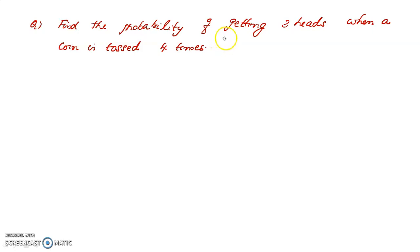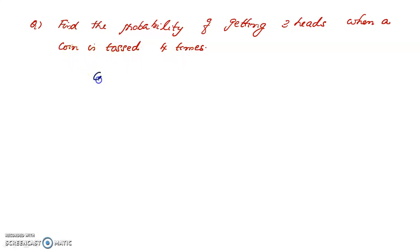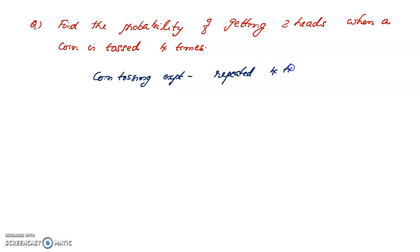Find the probability of getting three heads when a coin is tossed four times. This is a question about binomial distribution. We have to toss a coin four times — the coin tossing experiment is repeated four times. The number of repetitions is n, so n is equal to 4.